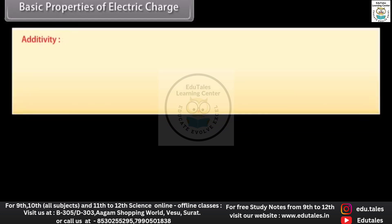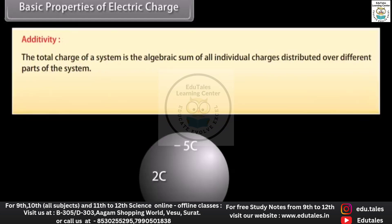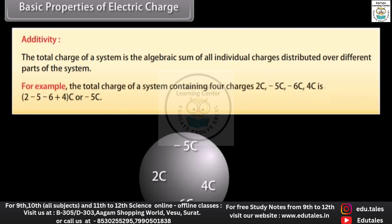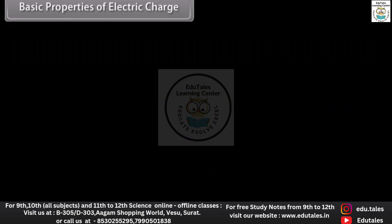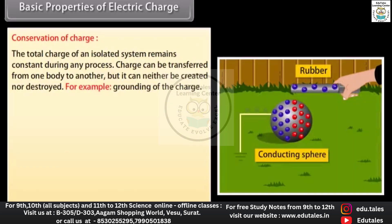Basic properties of electric charge — Additivity: the total charge of a system is the algebraic sum of all individual charges distributed over different parts of the system. For example, the total charge of a system containing four charges: 2 coulomb, minus 5 coulomb, minus 6 coulomb, and 4 coulomb is equal to minus 5 coulomb.